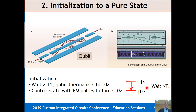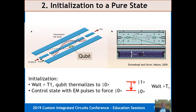The second DiVincenzo criterion: initialize qubits to a pure state. If I have qubits and don't know what state they're in, if I wait long enough, they'll relax to the ground state because these are metastable objects. Unlike a CMOS inverter, if you put it in the one state, over the coherence time it will fall back to zero at absolute zero temperature. You can wait for it to relax, or measure it and give it a pulse to make it relax.